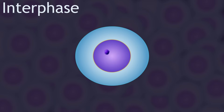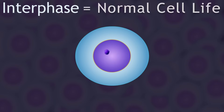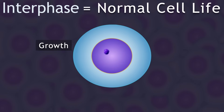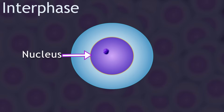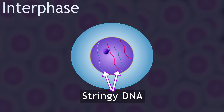Interphase is the part of the cell cycle where the cell is not dividing. Think of this as normal cell life — the cell is doing normal cell things: growth, metabolism, and so on. During interphase you should notice that the nucleus is intact and that the cell's DNA is all stringy like spaghetti. This stringy uncoiled form of DNA is known as chromatin.